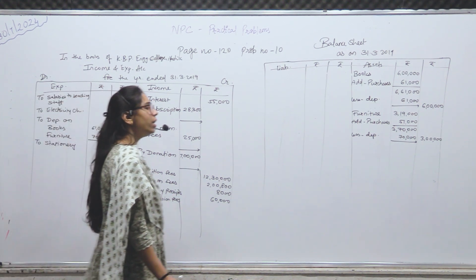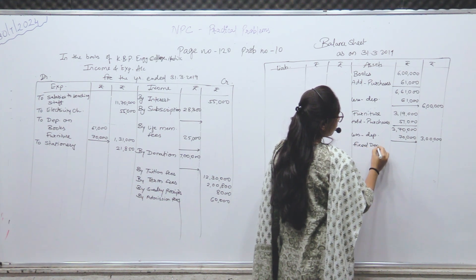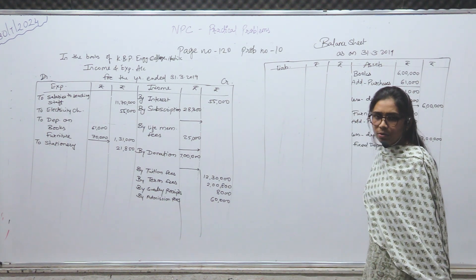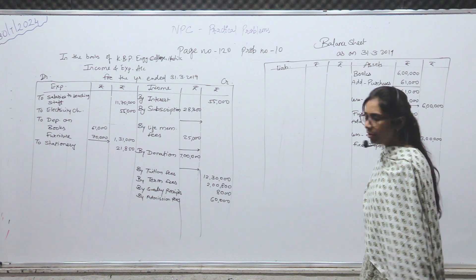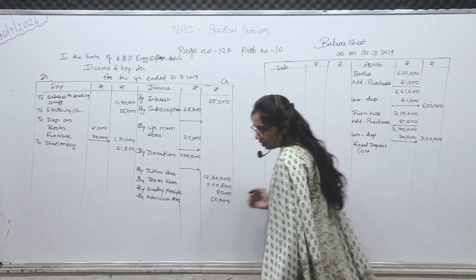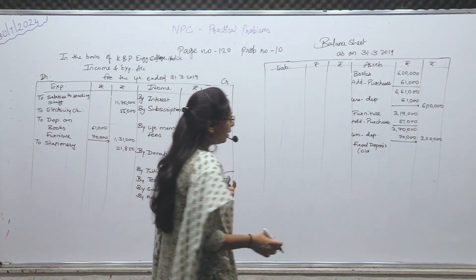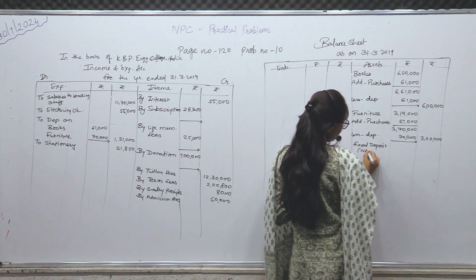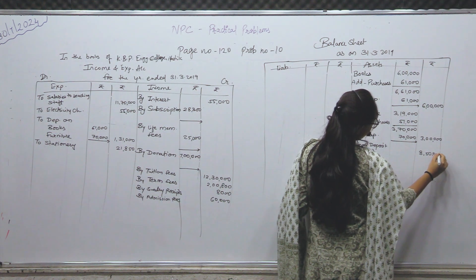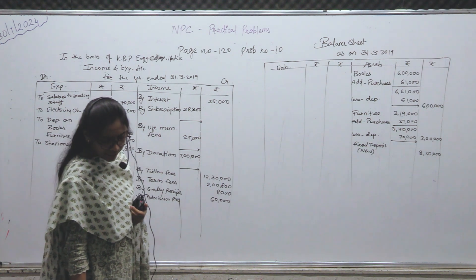Fixed deposit है — asset side में लिखोगे। Fixed deposit — inner में दोनों fixed deposit को add करके लिख सकते हो, या दोनों outer में old/new करके लिख सकते हो। यह new है — 8,50,000 वाले। पुराने वाले additional information में नीचे दे रखे हैं। Balance carried down — closing balance।